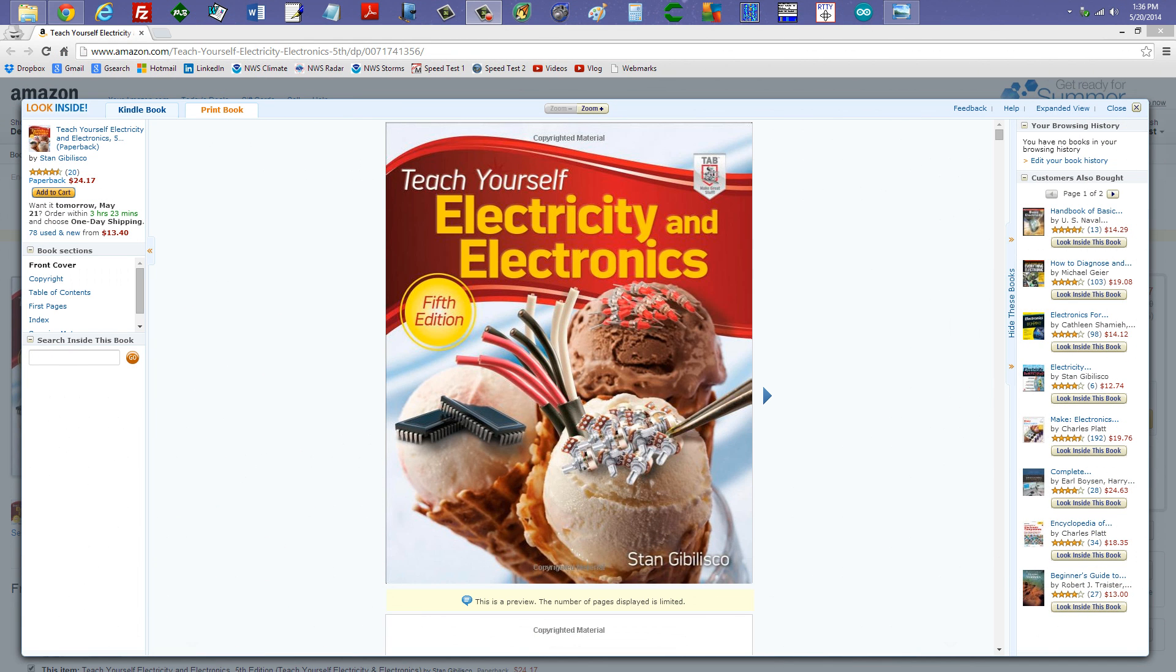Stan Gibilisco here to explain just briefly how a semiconductor diode serves as a one-way current gate. You can find a more detailed explanation of all this in Chapter 19 of this book, Teach Yourself Electricity and Electronics, 5th edition.